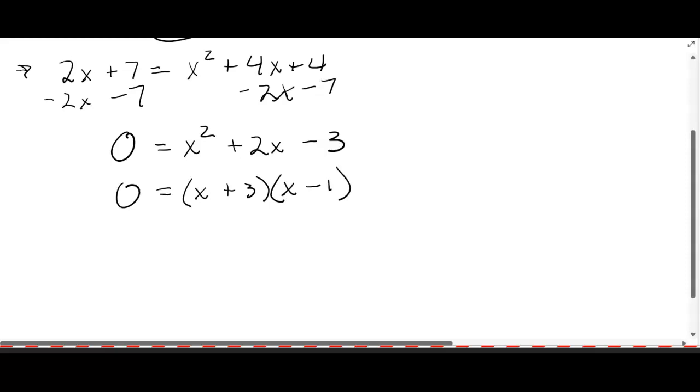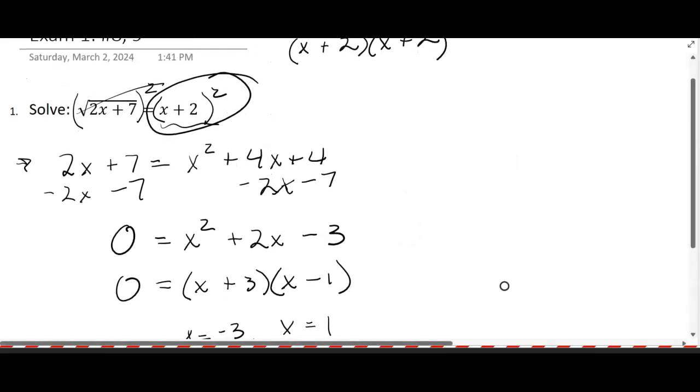But it does factor, x plus 3 and x minus 1. Now you can use those other methods to solve the quadratic, that's fine. But I get x equals negative 3 or x equals 1. You have to check these though because you squared both sides. So go back to the original, we have to check.